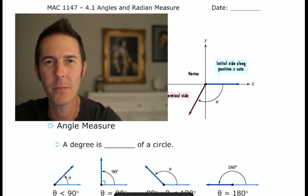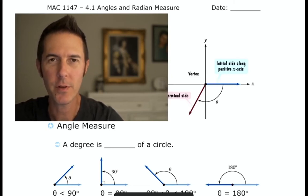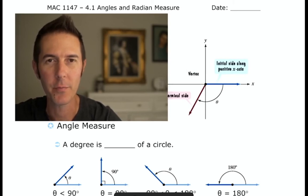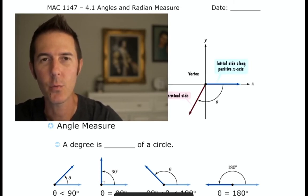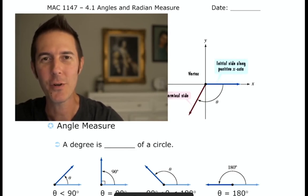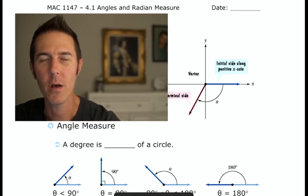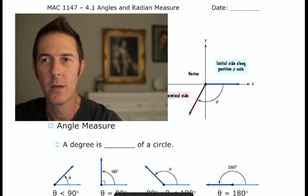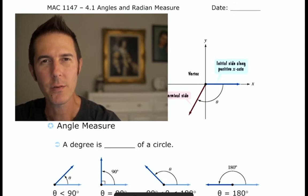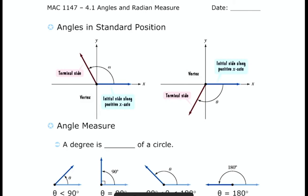Welcome, my name is Matthew and in this video I'm going to talk to you about angles and radian measures, which is one of the very first conversations we need to have in our study of pre-calculus. I'm going to be using notes that were originally adapted for Blitzer's Pre-Calculus Third Edition. I highly recommend you download these notes so you can fill them in as you go along.